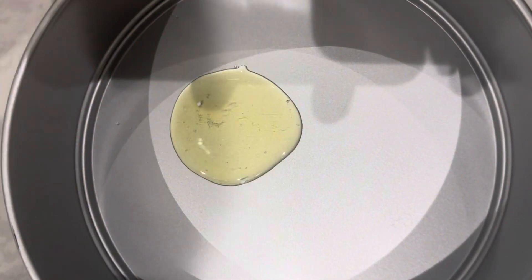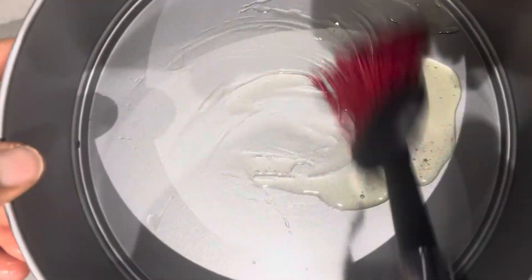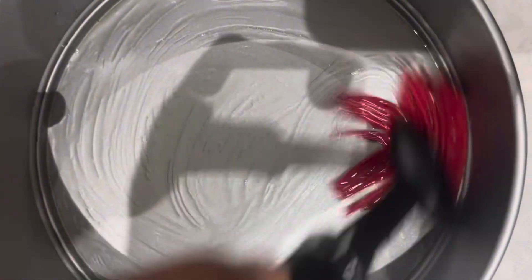Add in 1 teaspoon of oil into a pan and spread it around. Place in a circular baking paper. Add the cake mixture into the pan.